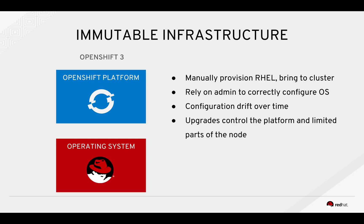It's useful to go back and compare this to OpenShift 3 before we talk about OpenShift 4. OpenShift 3 really separated the operating system from the platform itself. What you would do as an admin is manually provision RHEL — on Amazon that might be using an AMI, on VMware that would be importing the OS image, on bare metal you might be network booting it. However you would bring up a node, you can bring up RHEL. Then the admin would be relied on to correctly configure that OS, and all the configuration drift that might happen over time.